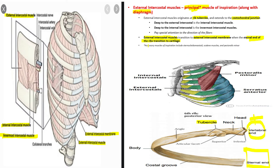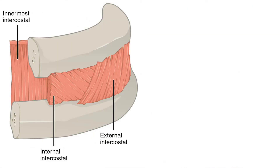As a side note, there are principal and also accessory muscles of inspiration. The accessory muscles of inspiration are the sternocleidomastoid, scalene, and pectoralis minor.